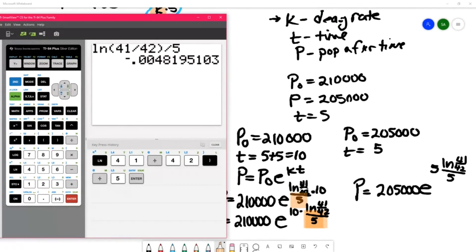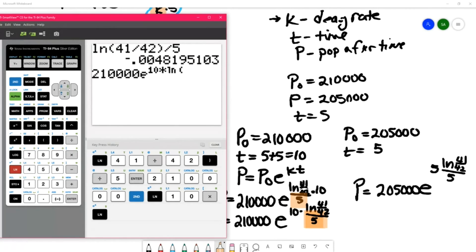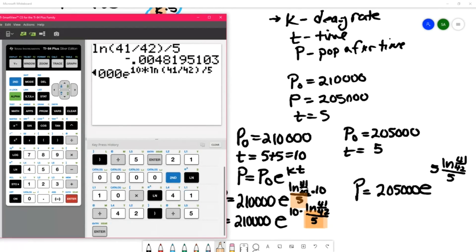I would type for the first one: 210,000 e^(10 × ln(41/42)) and then over 5. So within an additional 5 years, our population is now 200,119.